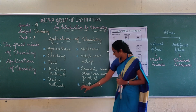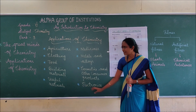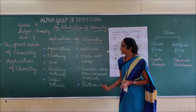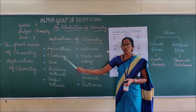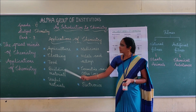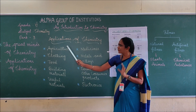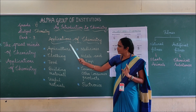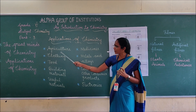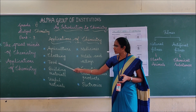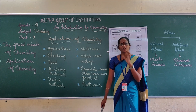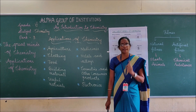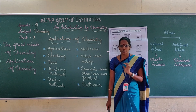So these are the things about electronics and the applications of chemistry. Mainly everything is based on chemistry. All the things you take — from agriculture, clothing, food, building materials — everything is made by chemical processes. That point you should remember.